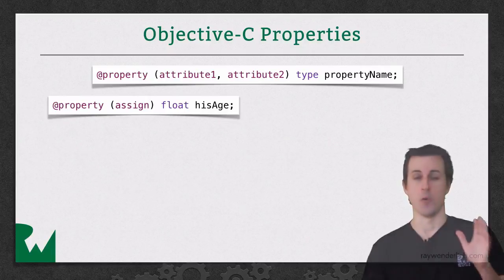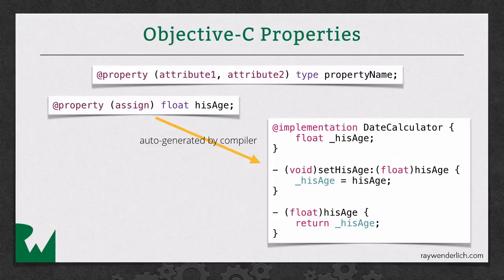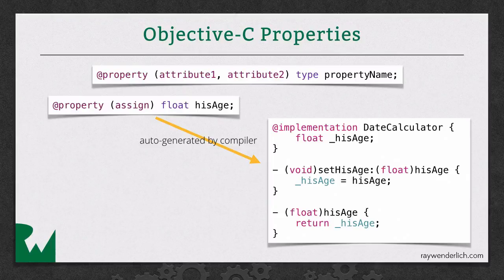And just by putting this one line of code, look at what Objective-C, the compiler, will do for you behind the background. All this code you see on the right will be auto-generated by the compiler. At the top, you see it creates a private instance variable for you, and by default, it will automatically name the variable based on the name of your property, but with the underscore ahead of it. So that's why I like to use underscores also when I create instance variables. That way, whenever you see an underscore, you know it's an instance variable, not a property that you're working with.